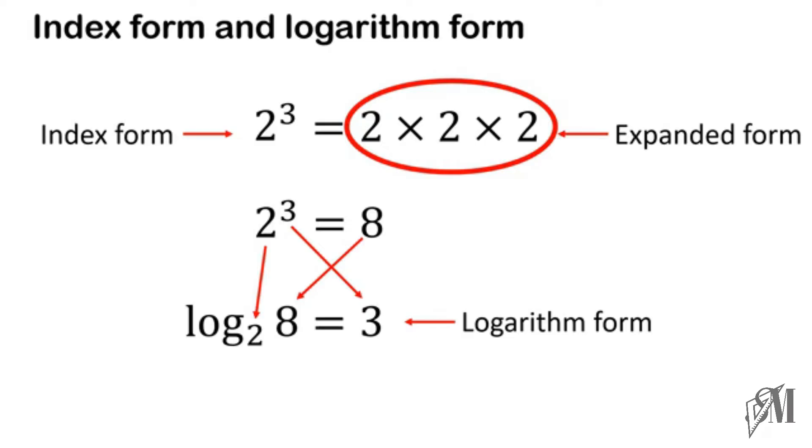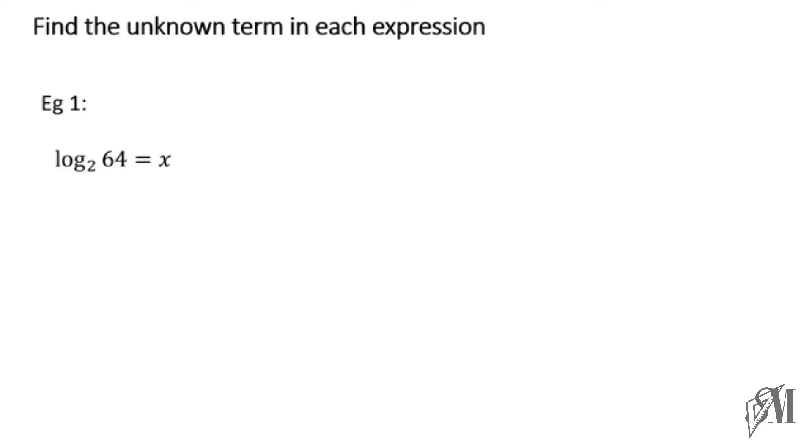Now let us see how to apply this knowledge in some questions. The first example: find the unknown term — log base 2 of 64 is equal to x. The first step is to convert this into index form. We take 2 as the base, x as the power, and write 64 on the other side of the equal sign.